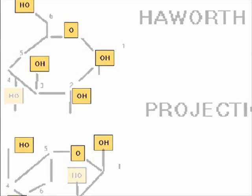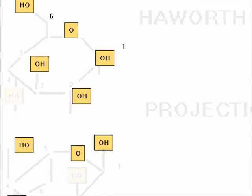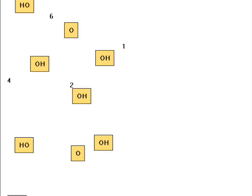A Haworth projection is a common way of writing a structural formula to represent the cyclic structure of monosaccharides with a simple three-dimensional perspective.